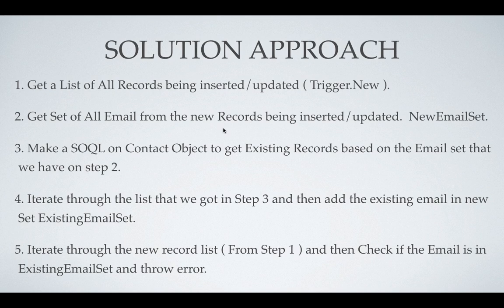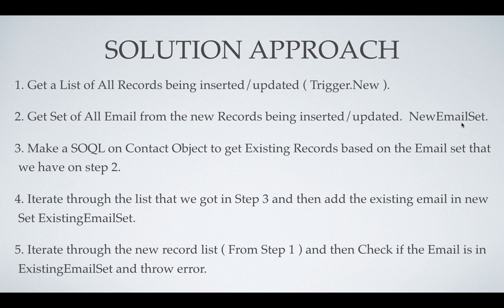We will iterate over those records, add the email values into a set called 'new email set'. The next step is to query the Contact object to get existing records based on those emails. Then iterate over that result list, add those emails into a set called 'existing email set'. Now we have two sets: one with new emails being inserted or updated, and one with emails that already exist in the system.